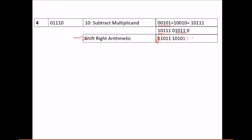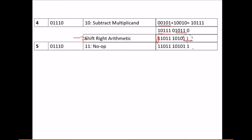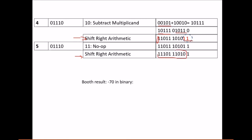After shifting we get 1-1 as the last two bits. As we know by now, 1-1 means no operation. We perform the right shift as the mandatory second sub-part of every step, shifting all bits right.